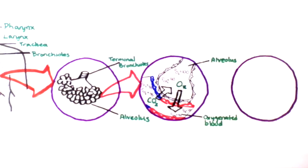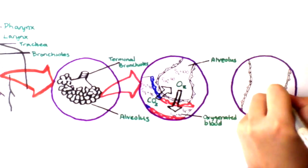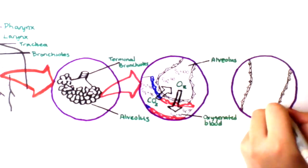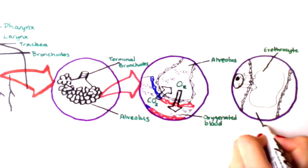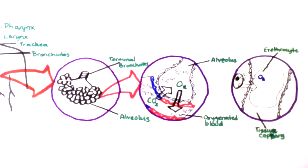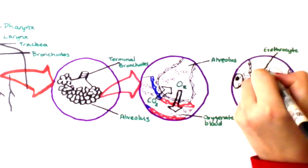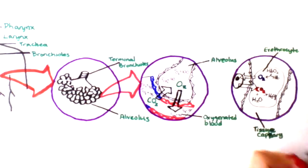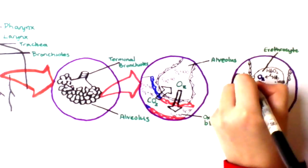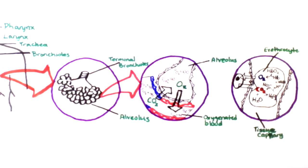Gas exchange in the tissues also occurs by simple diffusion. Hemoglobin, which is a protein inside red blood cells or erythrocytes, carries oxygen to the tissues. Once oxygen arrives, it moves down its concentration gradient into the cell, and the accumulated carbon dioxide within the cell moves down its concentration gradient into the red blood cell.